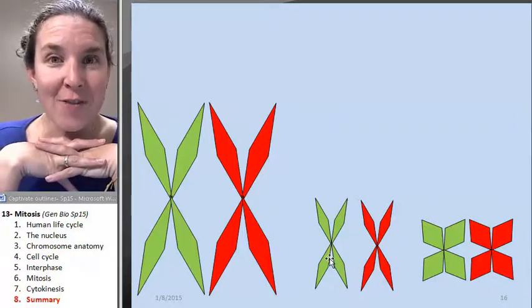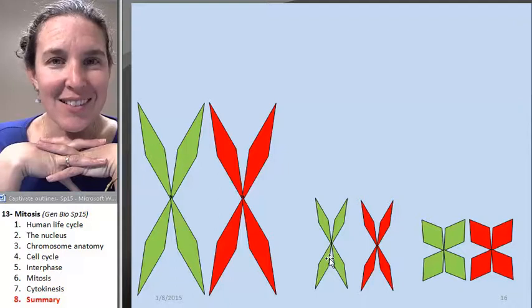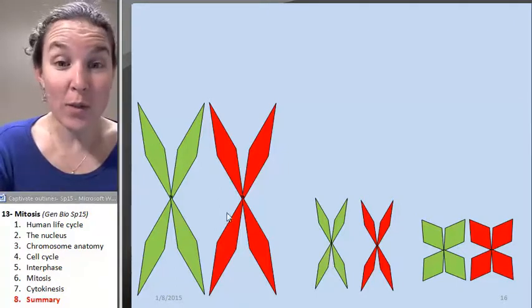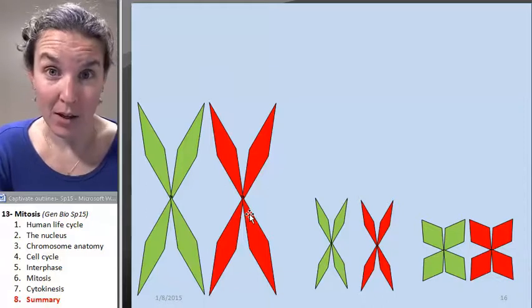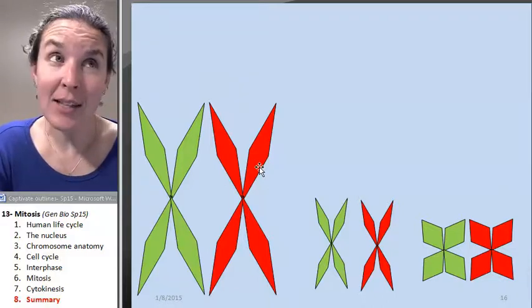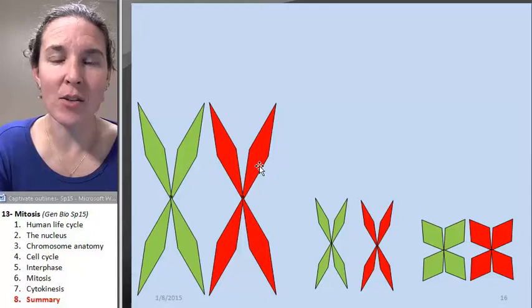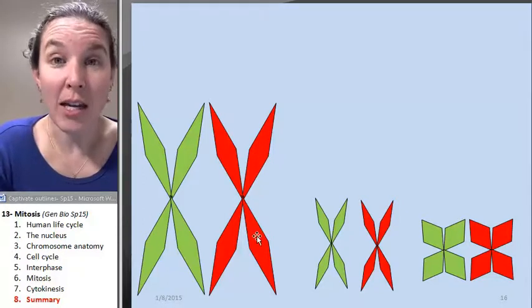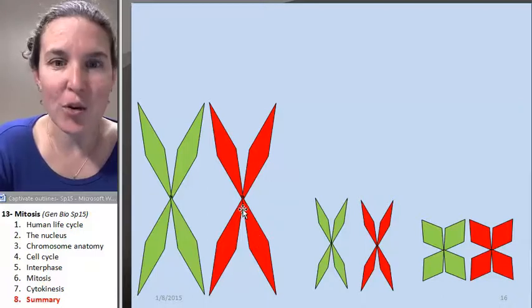Before or after S? After. We've totally replicated, duplicated. Try to say those words at exactly the same time, and you'll just do what I just did. We've replicated our DNA, so we have sister chromatids.